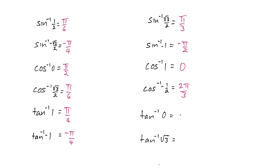Tangent inverse of 0? Well, that means the y value must be 0 because tangent is y over x, so that happens at 0 radians. And finally, how about this tangent inverse of the square root of 3?